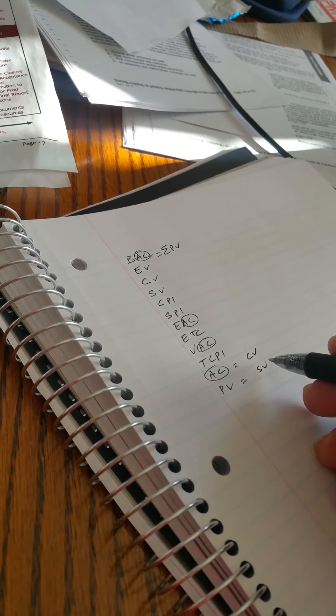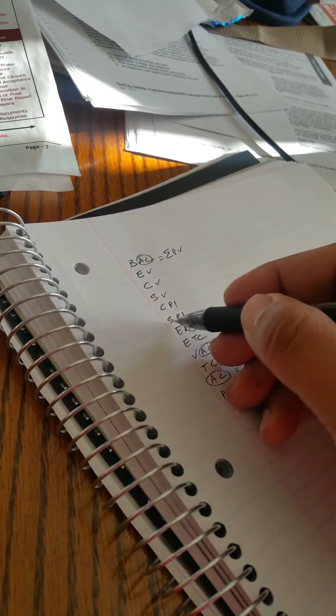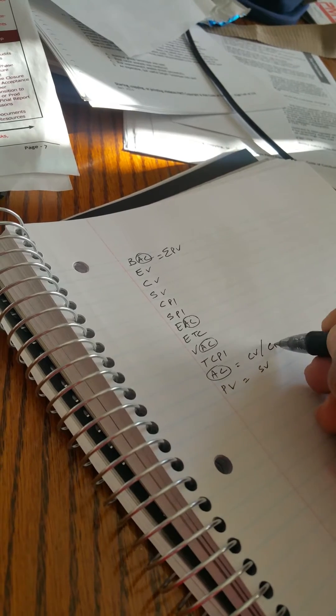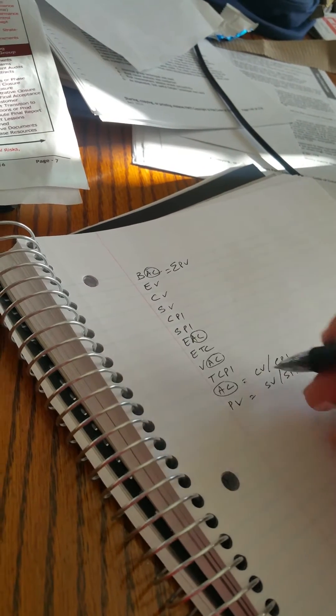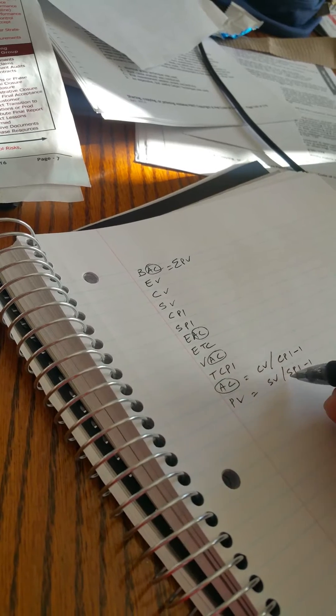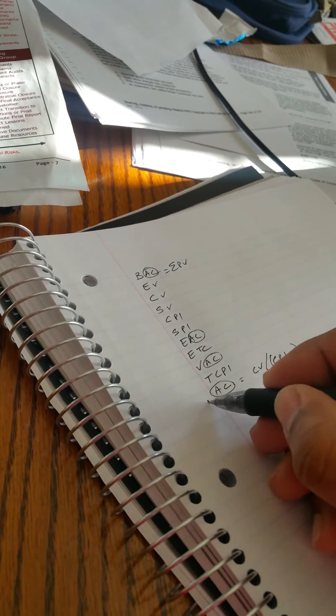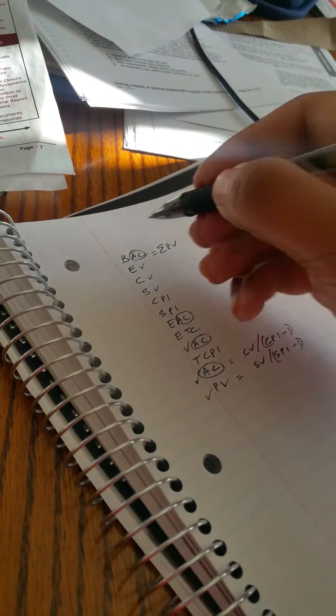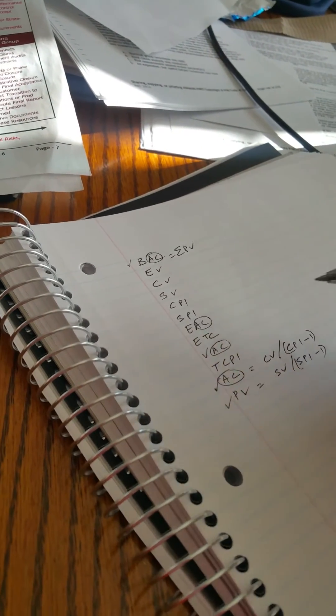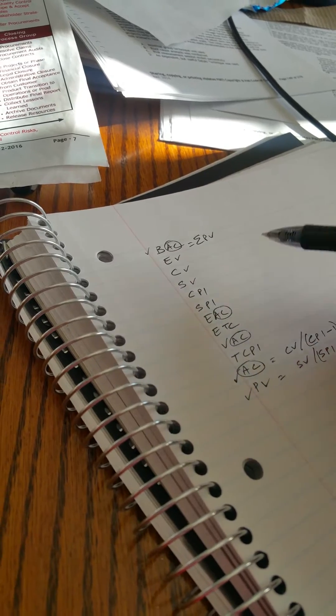Part of the equation is done, and then I'm going to put CPI and SPI: CPI, SPI from here, and then subtract 1. And this is now done. The last two equations are done. First equation is done. Now middle part: CV, SV, CPI, SPI.